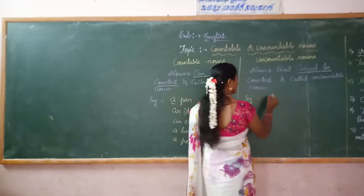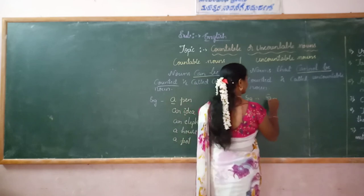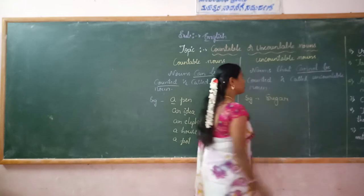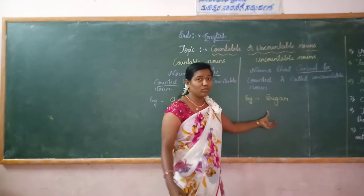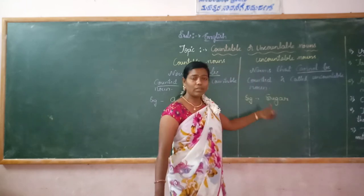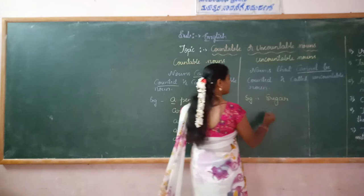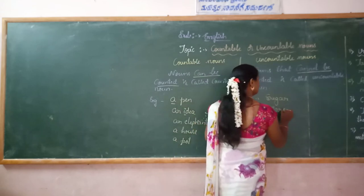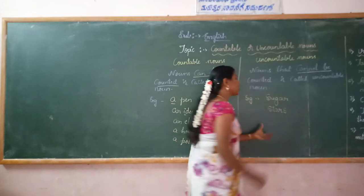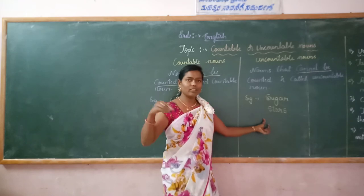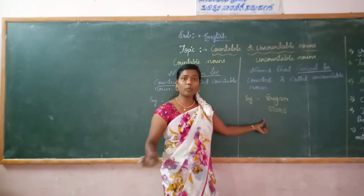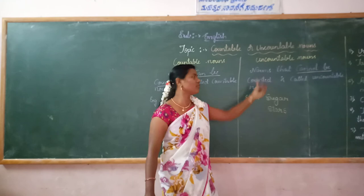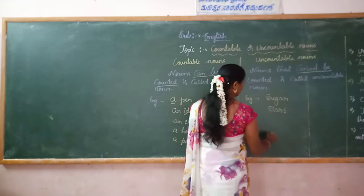Sugar — is it possible to count sugar? No. So it is an Uncountable Noun. And stars — is it possible to count the stars in the sky? No, that is not possible. So stars is also an example of Uncountable Nouns.